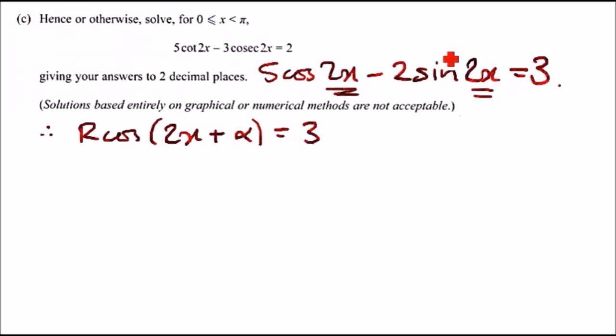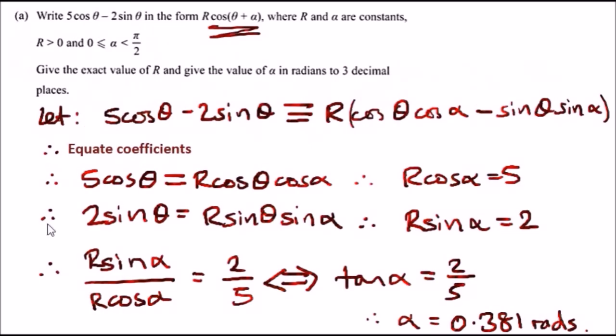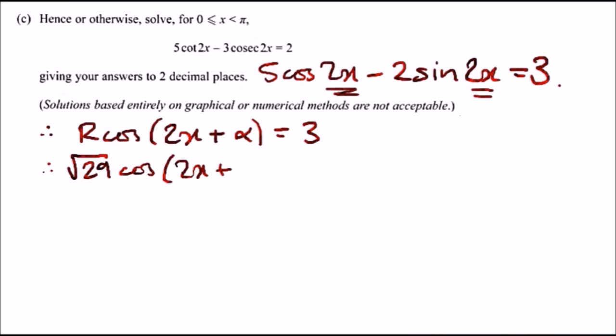What were the values? Well, r was found to be I believe root 29 cos, and then we've got 2x plus the alpha here I think was 0.381 radians, equals 3. Now we just simply solve this. All we can do is just divide it by root 29 and then cos inverse. This should give us 2x plus 0.381.